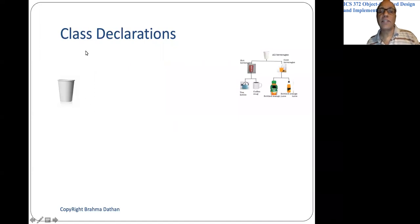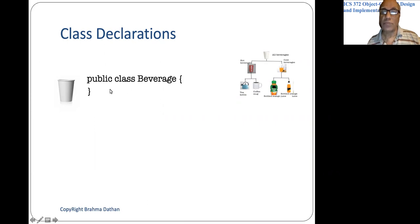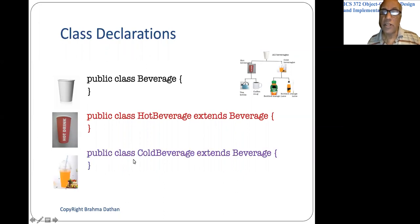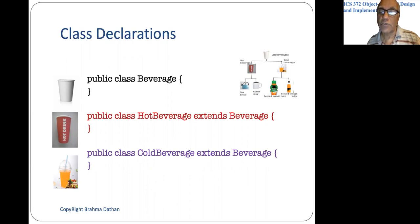If you consider the corresponding class declaration — suppose you wanted to represent this in Java — it would be like: public class Beverage. This would be storing any beverage. Then public class HotBeverage extends Beverage — this can only store hot drinks, more specialized than Beverage. And public class ColdBeverage would represent cold beverages. A reference of ColdBeverage type can store any cold beverage object, such as mango juice or orange juice.